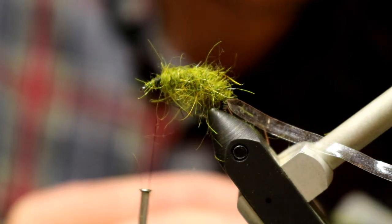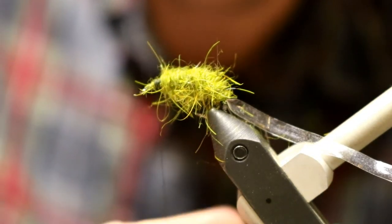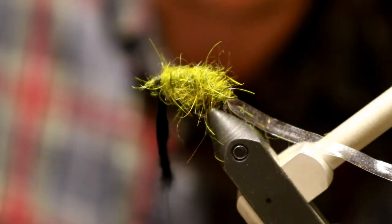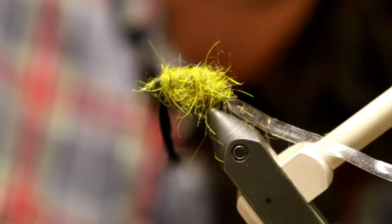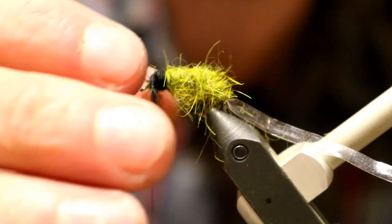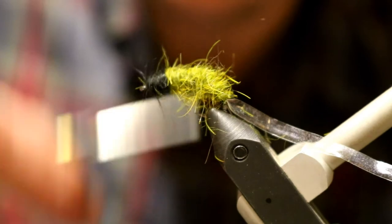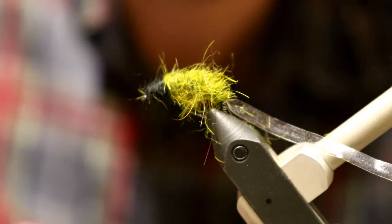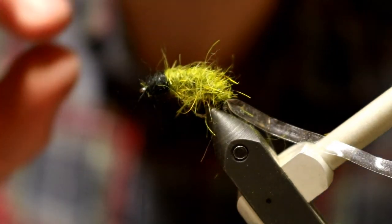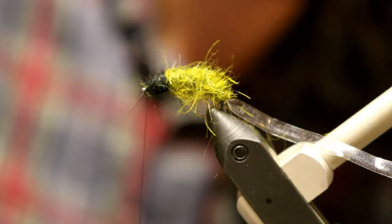Next I'm going to take some black hare's ear dubbing. I'm going to add that in. I'm just going to dub the front of my fly. Just like that. Give it a little black head. If you've ever seen caddis in the wild you'll notice that they aren't completely green. They actually have either a little brown or a little black head. In my area they tend towards black.